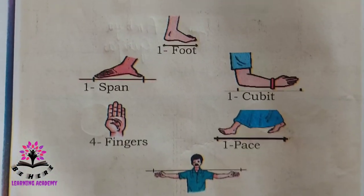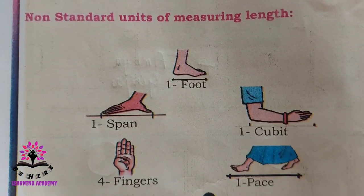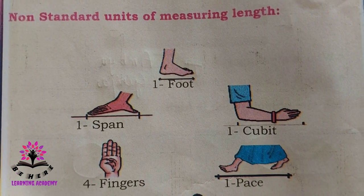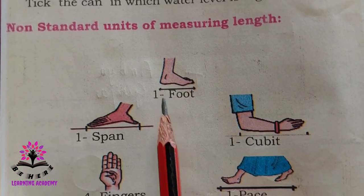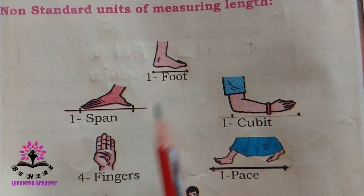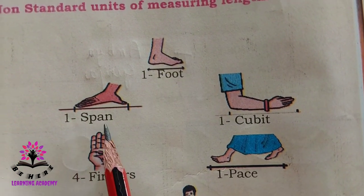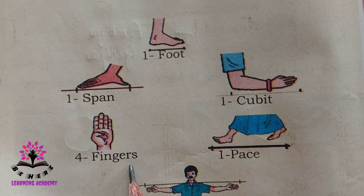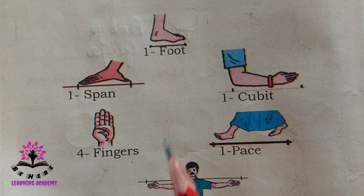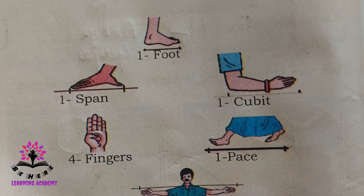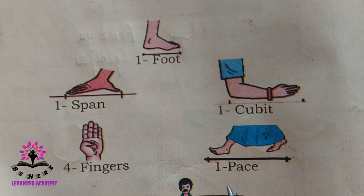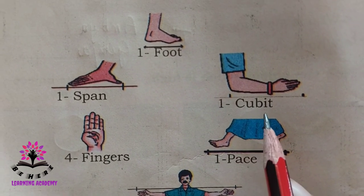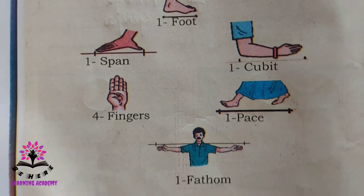These are some of the non-standard units of measuring length: a foot, a span, four fingers, one fathom, one face, and one cubit.